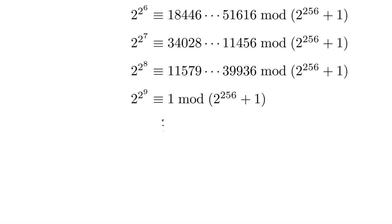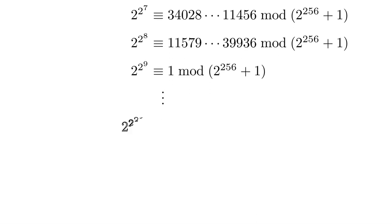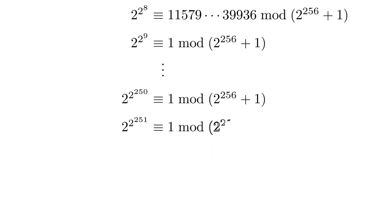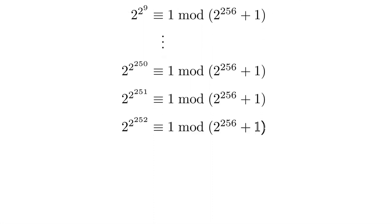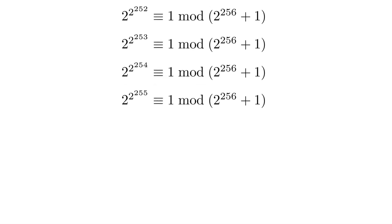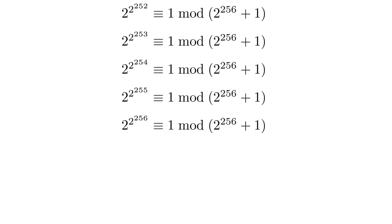And once I get to 1, every subsequent time that I square, I'm just still at 1. So, you know, I'll just keep on doing this repeated squaring. I don't actually have to do any computation because 1 squared is 1. And eventually, I find out that 2 to the power 2 to the power 256, that's 1.